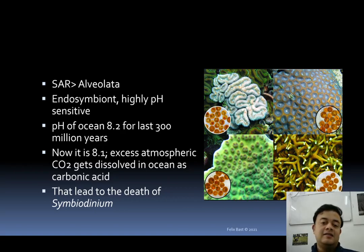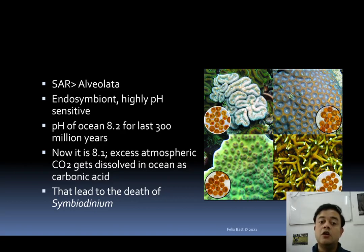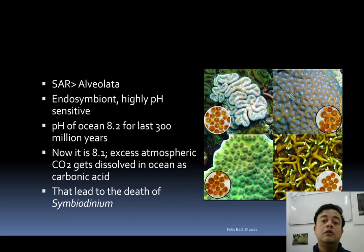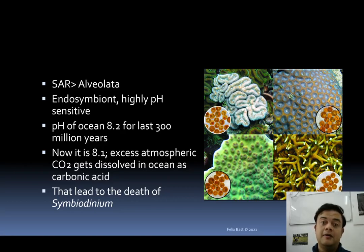Symbiodinium is an endosymbiont in cnidarians forming coral reefs, and it is highly pH sensitive. The world's ocean pH has now decreased. Because pH is a logarithmic scale, even a small numerical change represents an exponential real-world difference. The ocean's pH had been 8.2 for the last 300 million years; right now the average is 8.1 — a change of just 0.1.